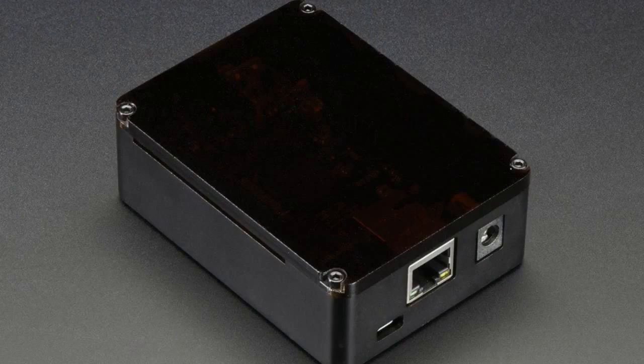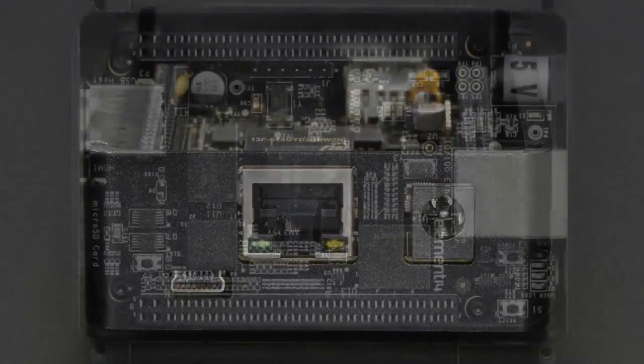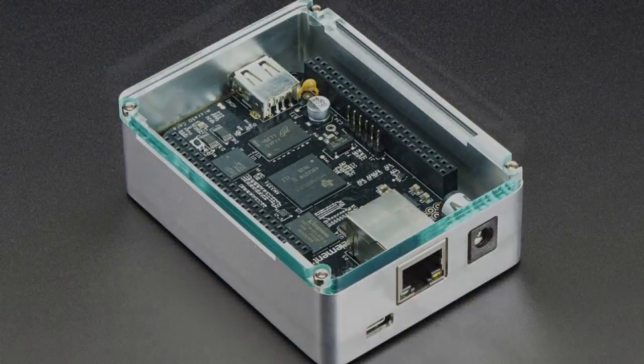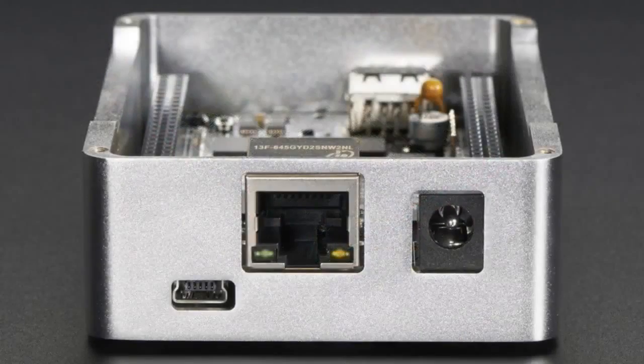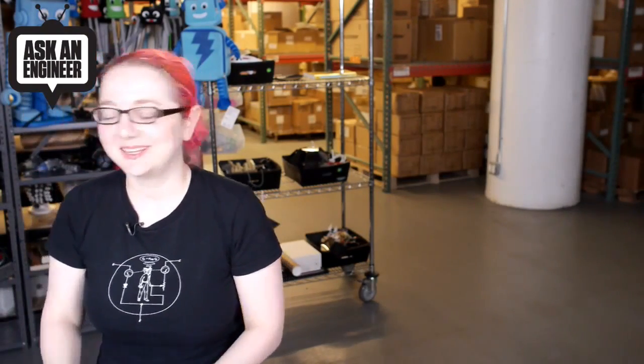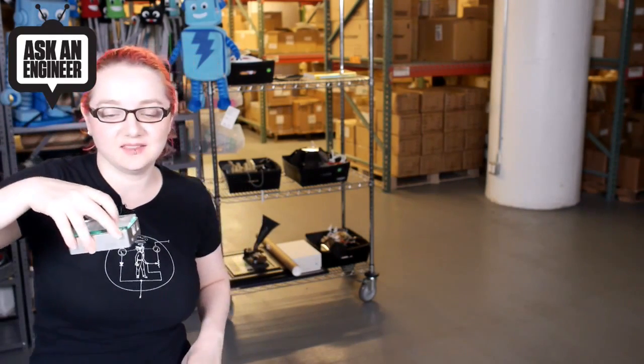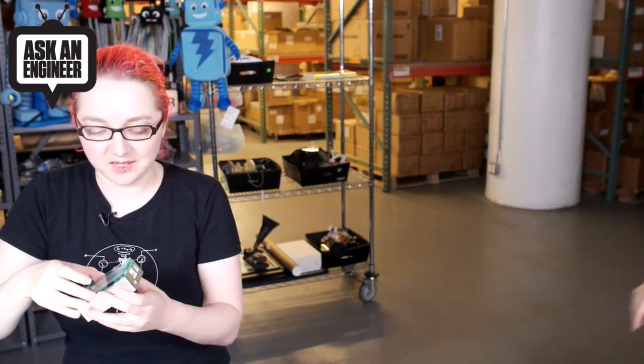We have a couple cases. These cases are for the BeagleBone Black. They come in black and silver. We had a similar case for the Raspberry Pi. It was really popular, and these are really beautiful cases designed in France. They're anodized aluminum, and we have a silver one. They have these beautiful cases with really nice acrylic tops in clear and smoke.